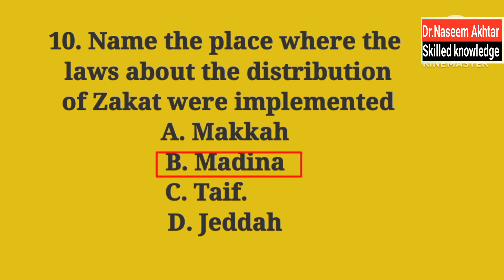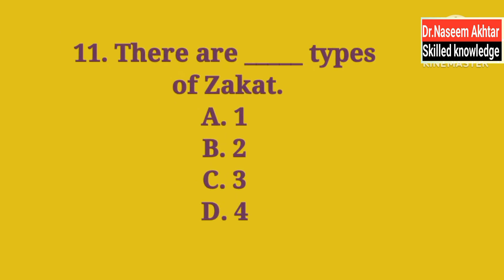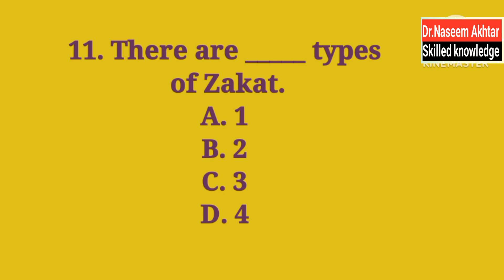MCQ 11: There are dash types of Zakat. Zakat کی کتنی types ہیں؟ A. One, B. Two, C. Three, D. Four. The correct answer is B — Two. دو قسم کی Zakat ہوتی ہیں۔